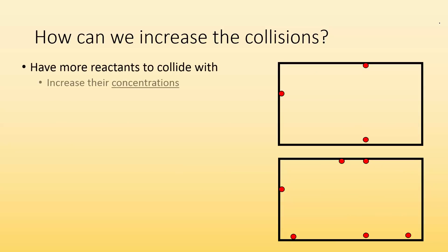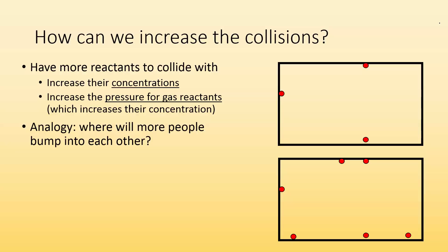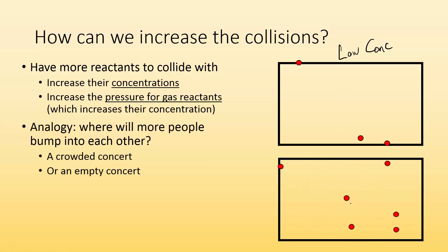You can also have more reactants to collide with by increasing their concentration. For gases, you can do that by increasing the pressure on the gas reactants, which also increases their concentration. Anything that increases concentration increases reaction rate. At low concentration, collisions happen every so often, whereas at high concentration — like a very crowded concert — particles are bumping into each other all the time.